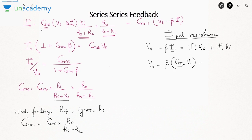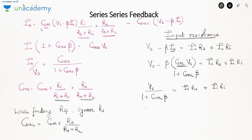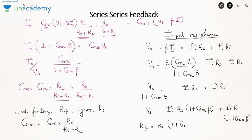Taking the factor 1 + Gml·β to the right-hand side, the effective input resistance Rif equals Ri multiplied by (1 + Gml·β). As expected, due to series connection at the input, the input resistance increases.